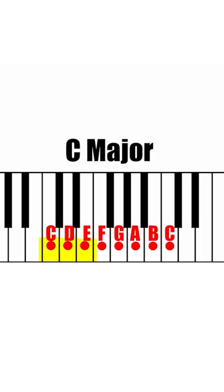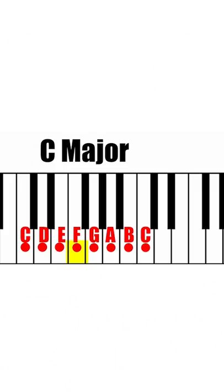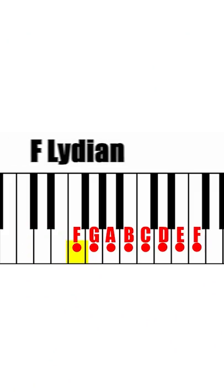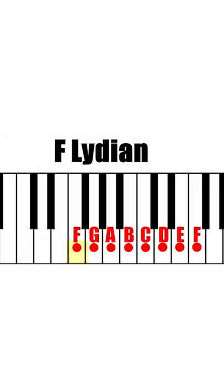Here's the Lydian mode explained in 60 seconds. Let's take a C major scale. Now we're going to play all those same notes, just instead of going from C to C, we're going to go from F to F. That's why sometimes we call Lydian the fourth mode of the major scale, because it's basically the major scale just if you started it on the fourth note.